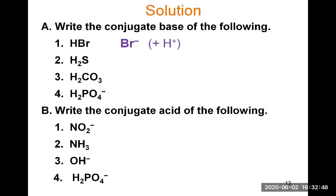For H2S, remove only one H+ from H2S. When H2S donates an H+, the subscript 2 disappears and you get HS, and when H leaves with a positive charge, it leaves behind a negative charge — so the conjugate base is HS-. To verify, add H+ back to HS-: HS- plus H+ gives H2S, and the positive charge cancels the negative charge. So HS- is the correct conjugate base of H2S.